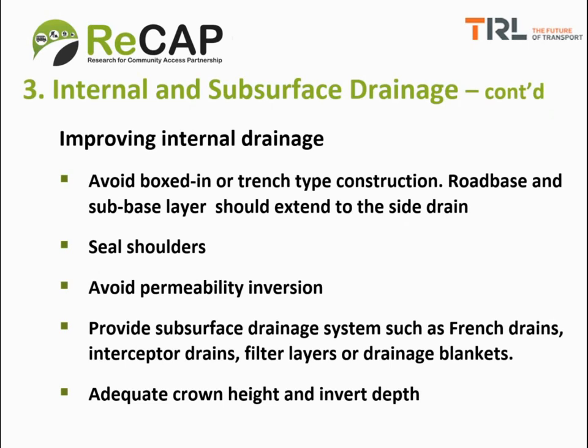We need to look at improving internal drainage to minimize detrimental effects of moisture migration into the pavement layers. Permeability inversion occurs when the permeability of the pavement and sub-grade layers decreases with depth. Under infiltration of rainwater, there is potential for moisture accumulation at the interface of layers. The creation of such a perched water table often leads to rapid lateral wetting under the seal, potentially causing base or sub-base saturation in the outer wheel track and catastrophic failure.